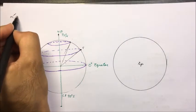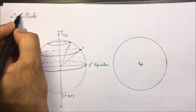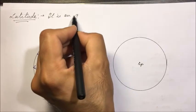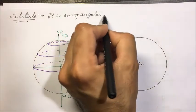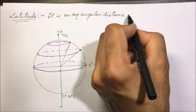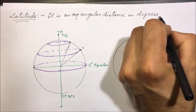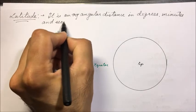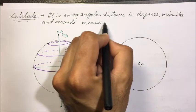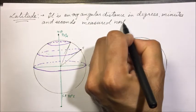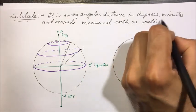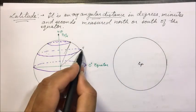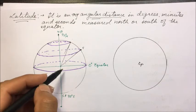Now we will be discussing latitude in detail. Latitude is an angular distance in degrees, minutes, and seconds, measured north or south of the equator. The reference is the equatorial plane.